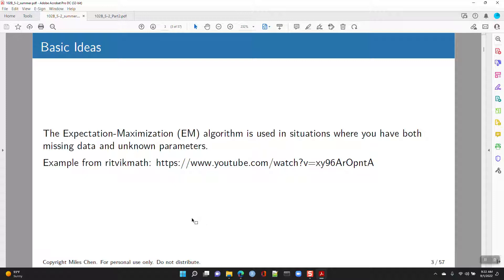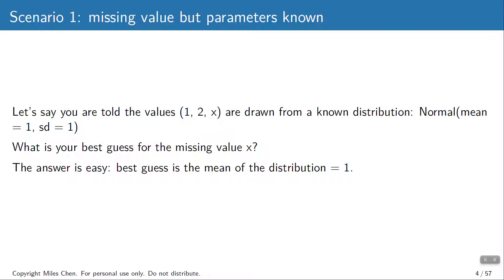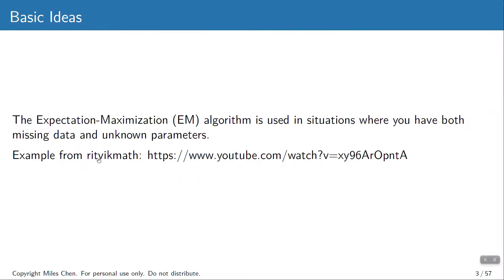The EM algorithm is used in situations where you have both missing data and unknown parameters. It's an iterative process where we switch between guessing the missing values and guessing the unknown parameters. Here is one easy scenario: you have a missing value but the parameters are known. These examples come from Ritvik Math's YouTube channel — a UCLA alum.